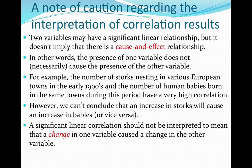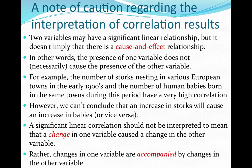Correlation is only the first step in proving a cause and effect relationship. There are many other statistical tests and mathematical analyses that need to occur before you can prove causation. A correlation simply means that two things are correlated — changes in one variable are accompanied by changes in the other variable, but not caused by them.